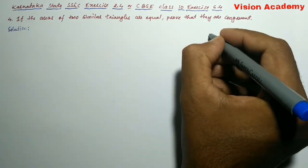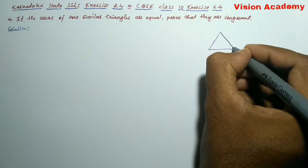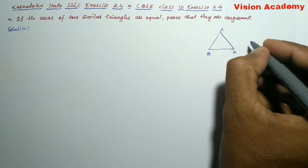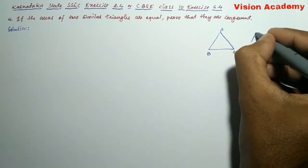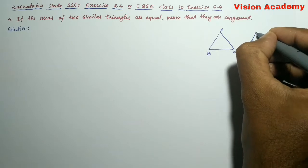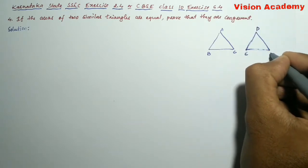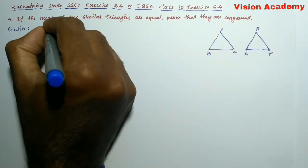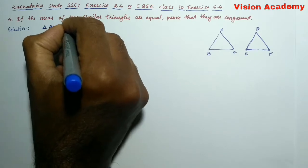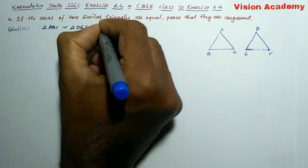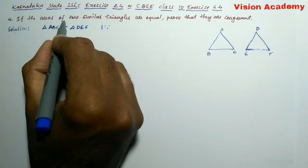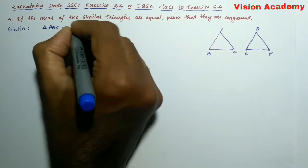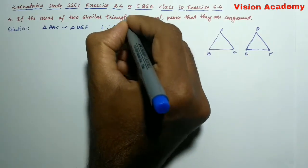Here, let us draw two triangles ABC and one more triangle DEF. Here, triangle ABC is similar to triangle DEF because it is already given in the question. If the areas of two similar triangles are equal, both of these two triangles are similar. It is already given.